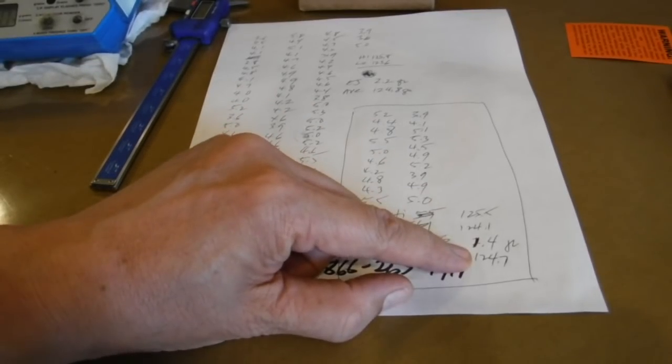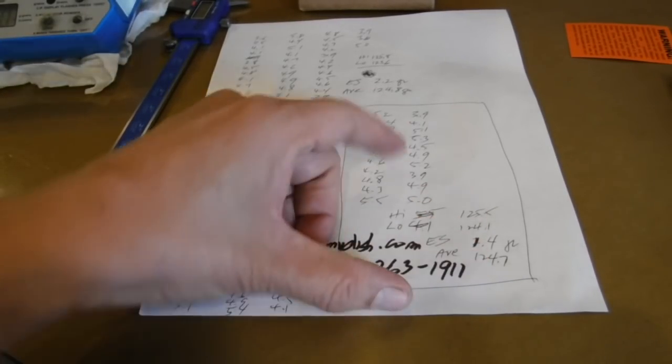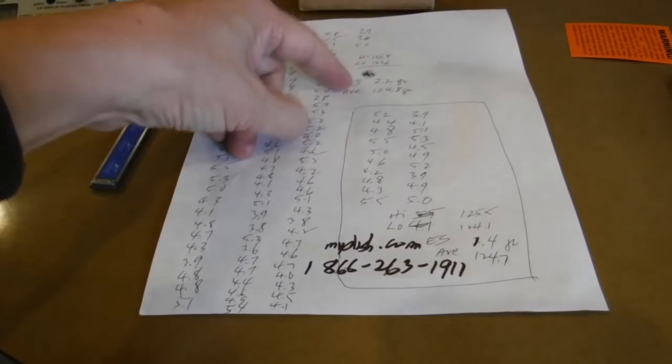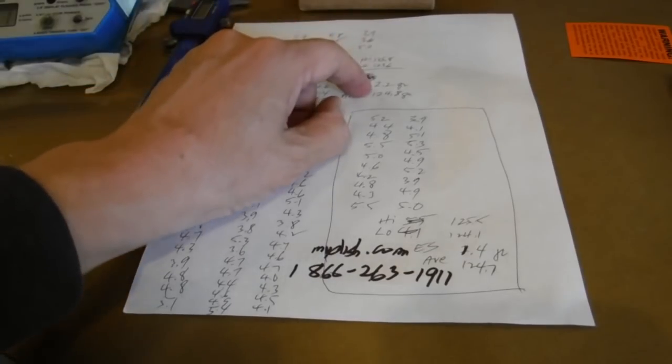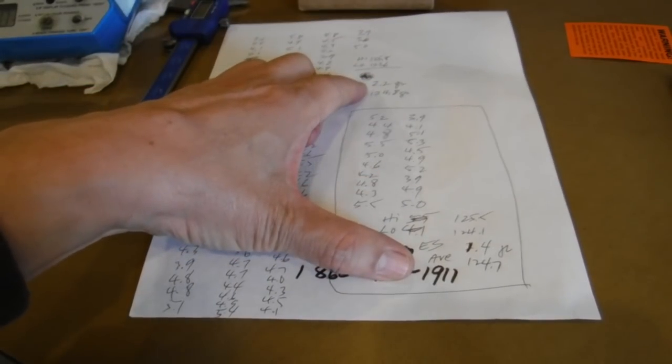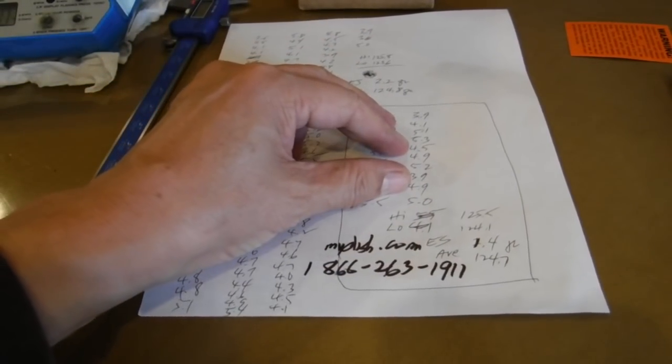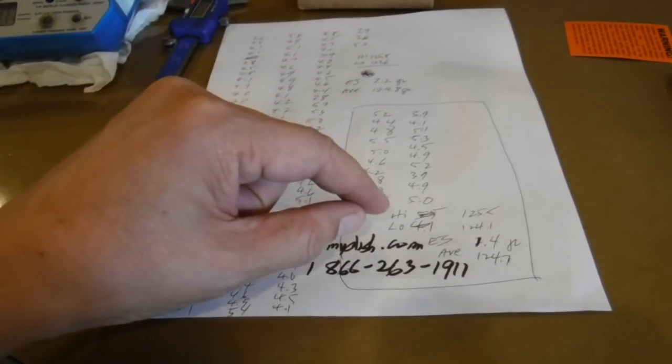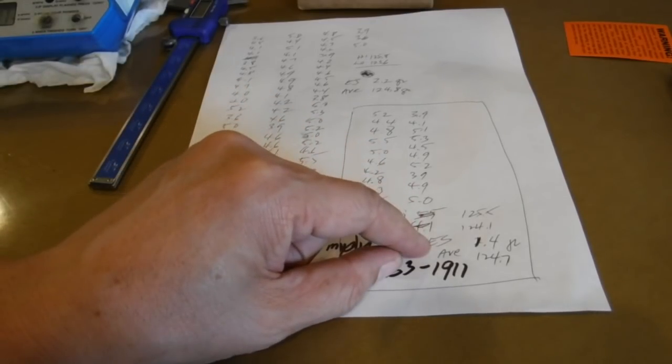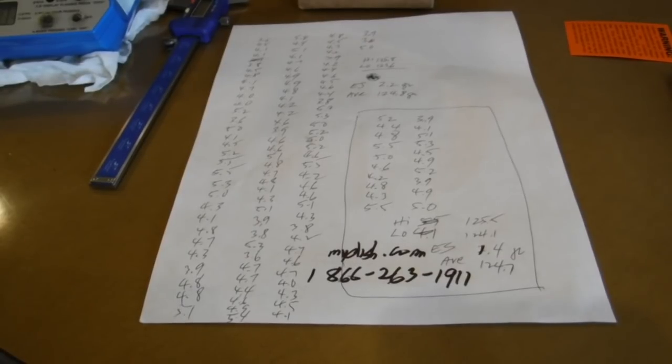However, the average is pretty close, 124.7 grains out of the 20, compared to 124.8 out of the 100, which is only one-tenth off. So, if you take representative 20, you get a good idea of the average, but the high, low, and the extreme spread is not identified just taking the 20. That's kind of interesting.